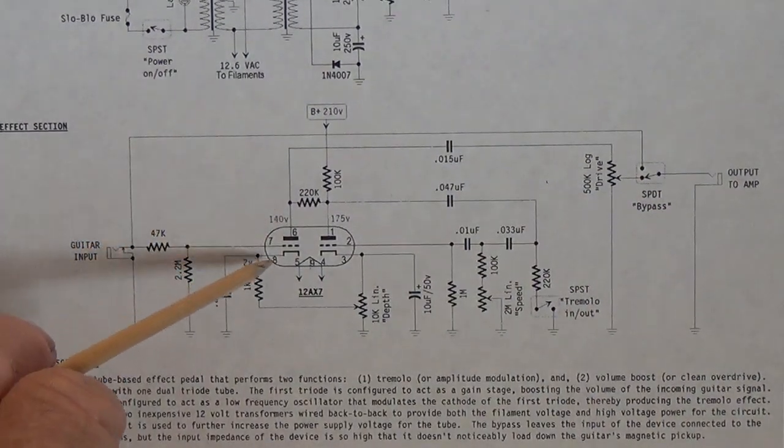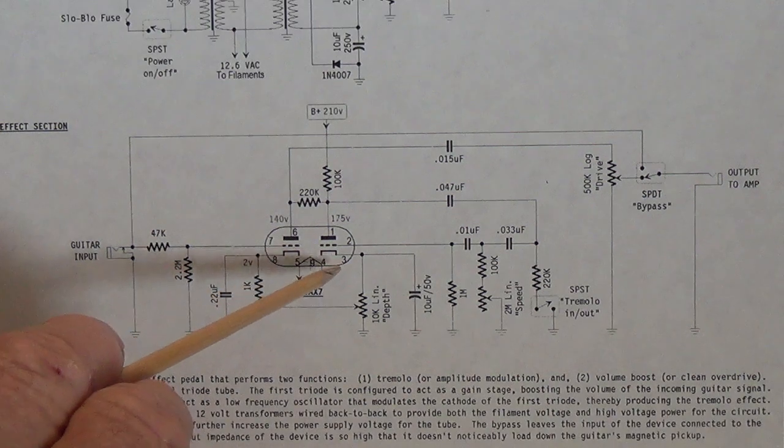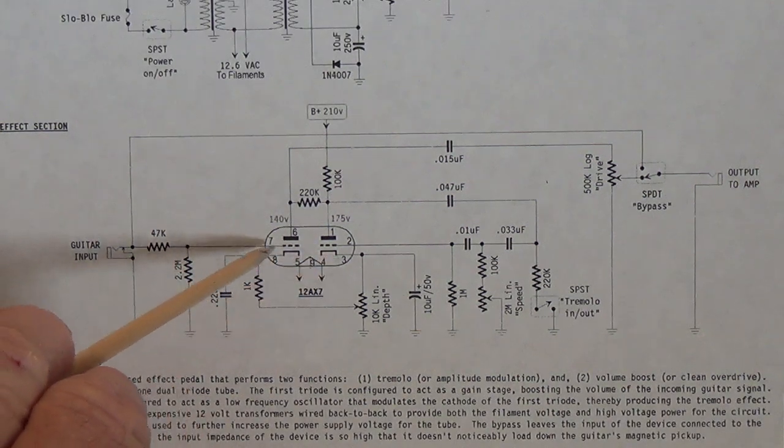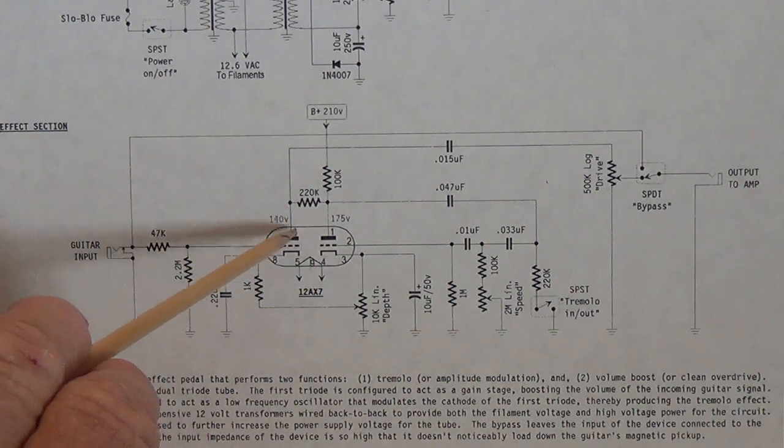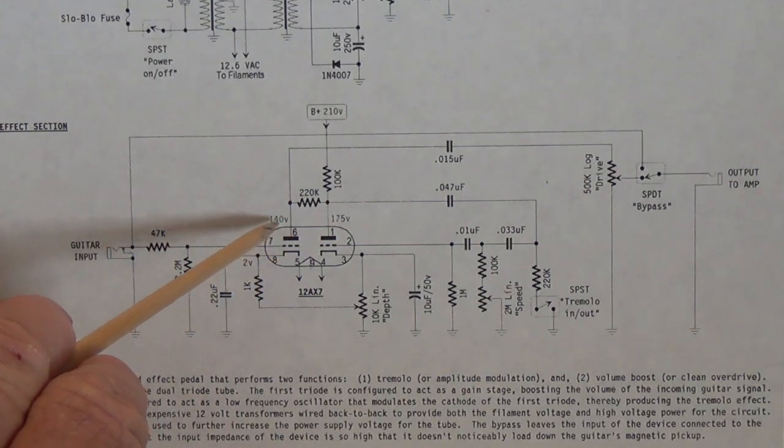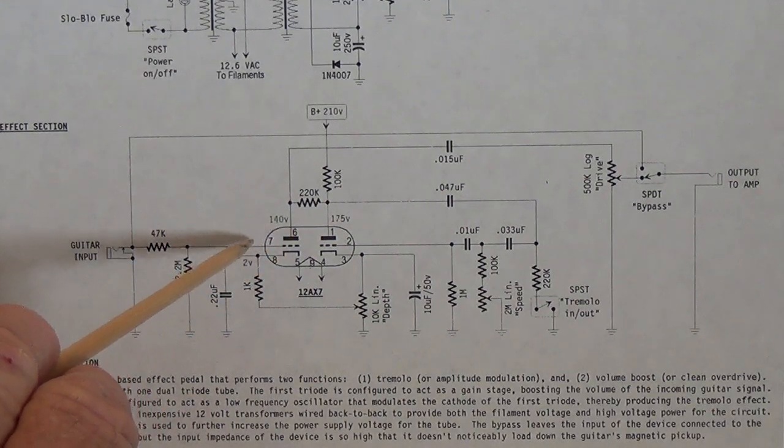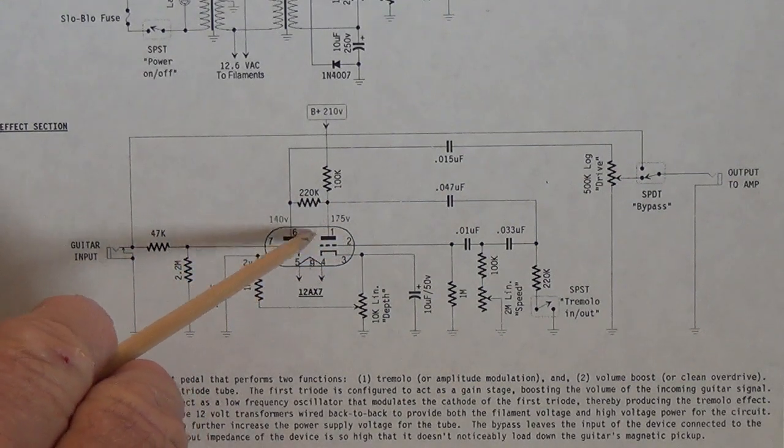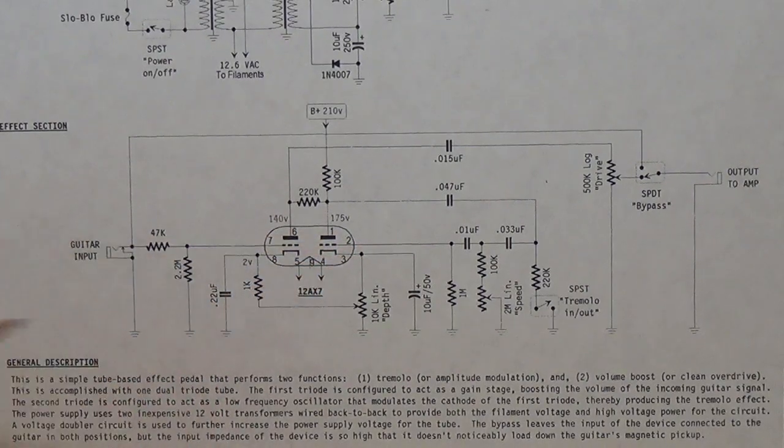We see here a 12AX7 tube which we know consists of two separate triodes. The first triode will be another pre-amplification stage. The second triode is going to be used as a tremolo oscillator.